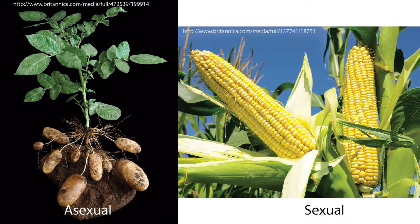There are two types of plant reproduction: sexual and asexual. In asexual reproduction, the offspring produced is genetically identical to the parent. In sexual reproduction, the offspring are genetically different from the parents. Both types of reproduction produce offspring that allow for the continuation of a plant species, and both methods of reproduction have individualized structures.